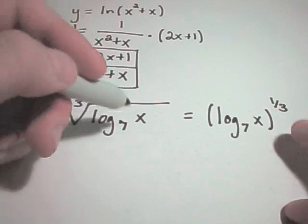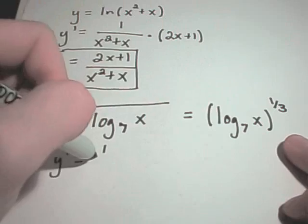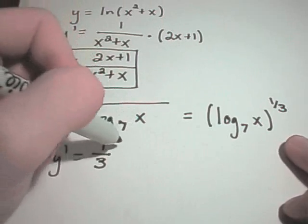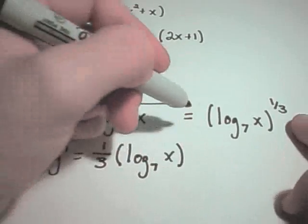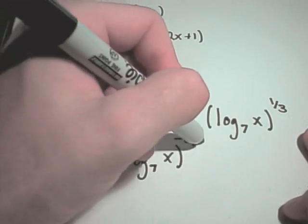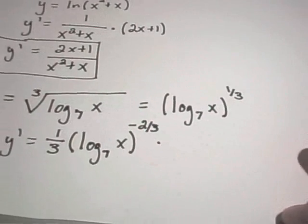Now I'm going to have to use the chain rule on this. If you bring the power out front, I'll have 1/3 times log base 7 of x. I have to take 1 away, so negative 2/3. Then I have to multiply by the derivative of the inside.